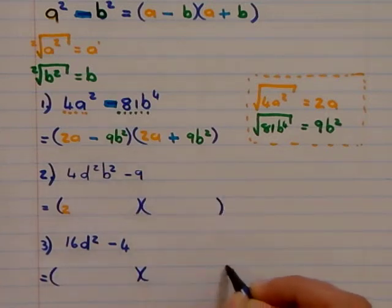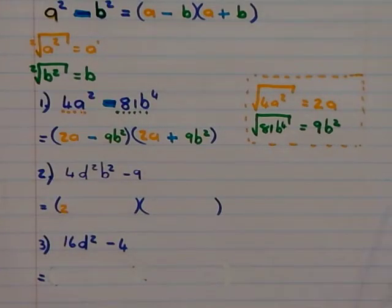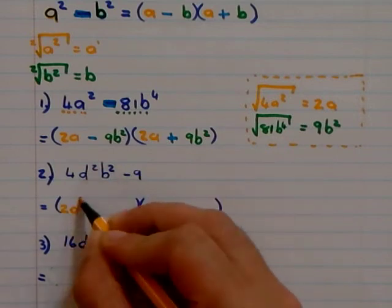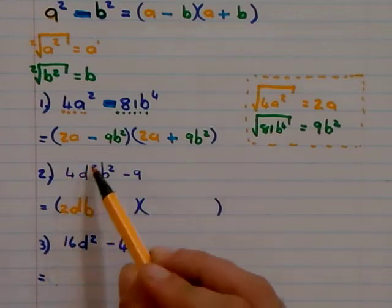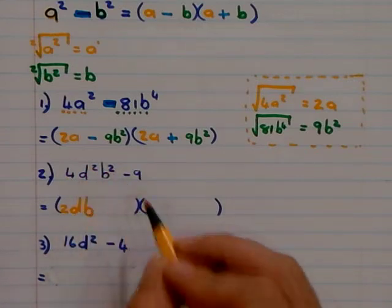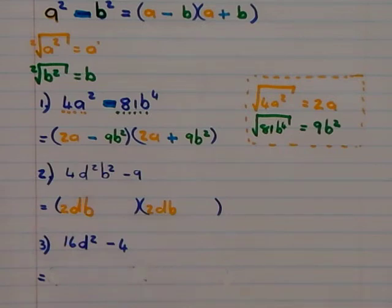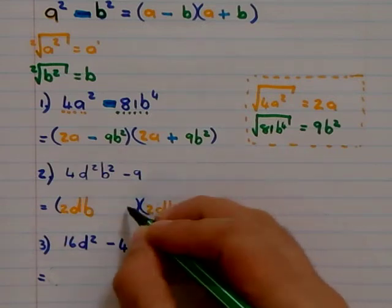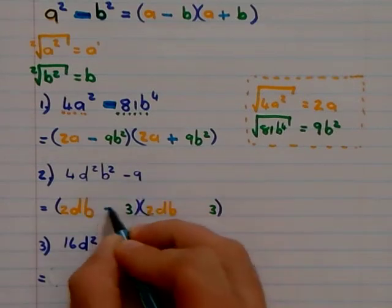Just keep in mind, I'm not going to tell you in the test you need to get a common factor. I'm not going to tell you in the test what you need to do. But just keep in mind, your first step is always common factor. So once we got square root of 4 is 2, square root of d² is d, square root of b² is b. So that's 2, 3, b. Exactly the same. Then the square root of 9 is 3. 3 times 3 is 9. Only difference is because that's a negative, I can say that's a negative and positive.